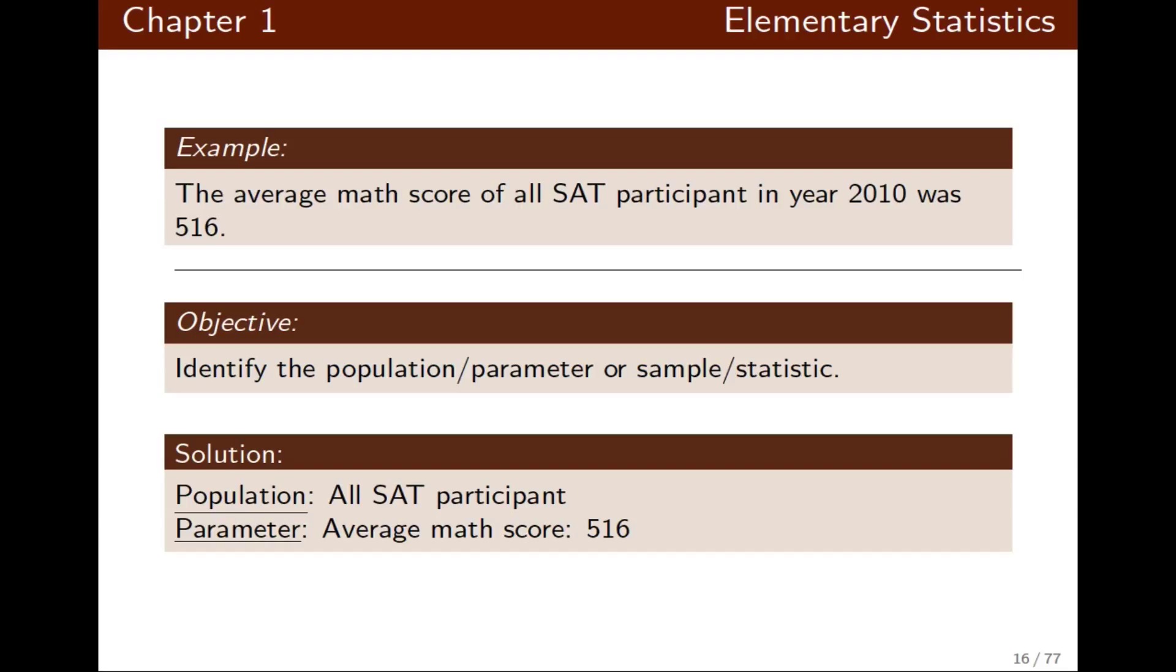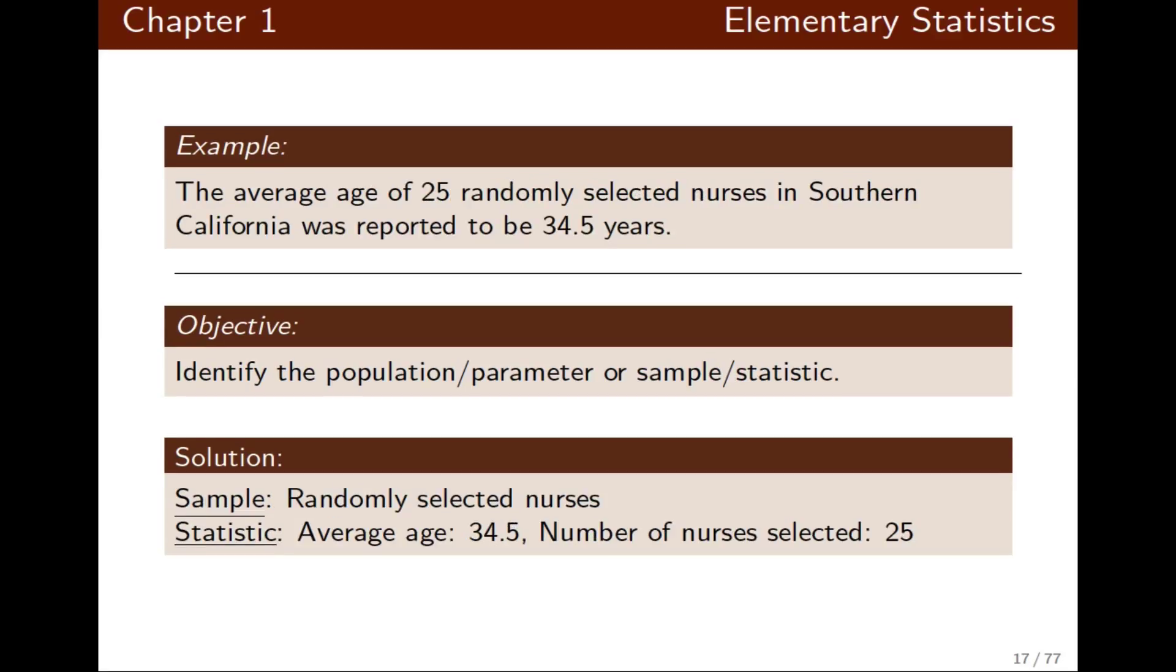The keyword here is 'all,' and 'all' implies all of them. Therefore, it's a population, and the average math score was 516—that would be a parameter. Let's look at this example.